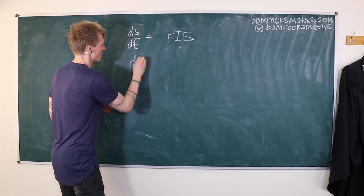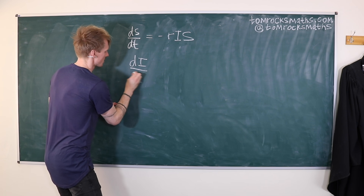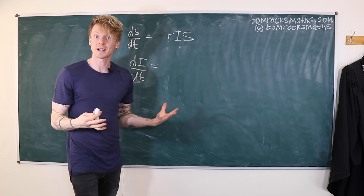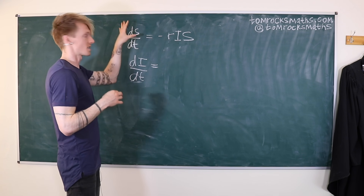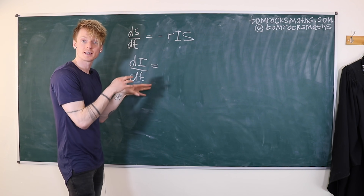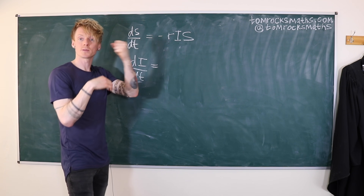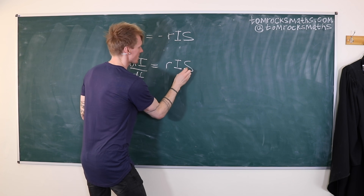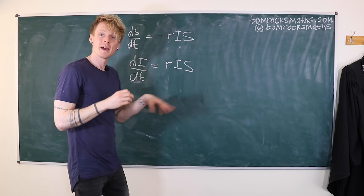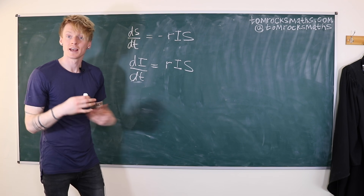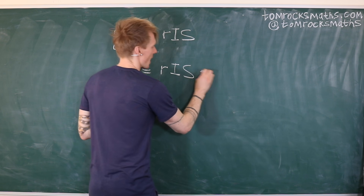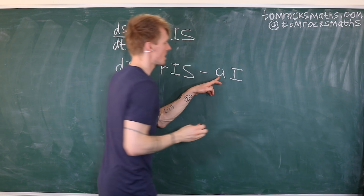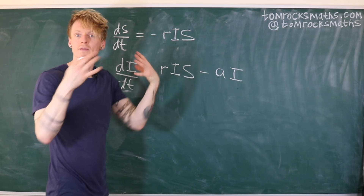Then our second equation, dI/dt, represents the rate of change of our infective population. So if the susceptible population decreases, somebody is moving from susceptible to infective, so this will increase at the same rate. But then people who are infected with the disease might recover, and this we say happens at a constant rate A, and it's proportional to the number of infectives.